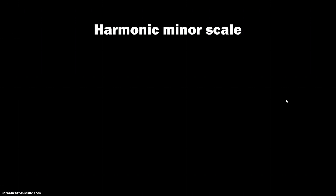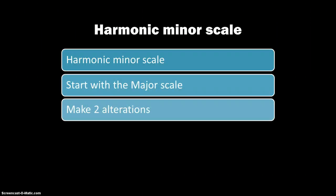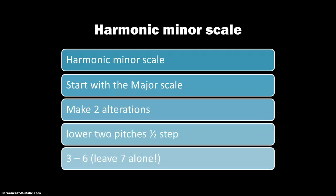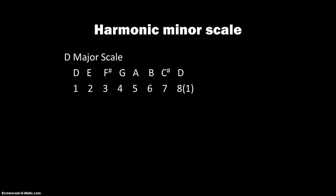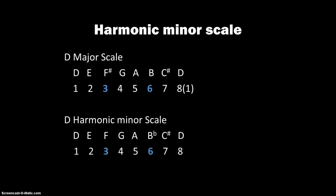Moving on to the harmonic minor scale. Again, we're going to start with the major scale, but this time we're only going to make two alterations. We're going to lower two pitches by a half step, and those will be the third and the sixth. We will leave the seventh scale degree alone. Here's an example — D major scale. We're going to target the third and the sixth, which are F and B. The F is already sharped, so we lower it by making it natural; and the B is natural, so we lower it by making it flat. Now we've got the D harmonic minor scale, and this is what that sounds like — kind of like the soundtrack to Aladdin.